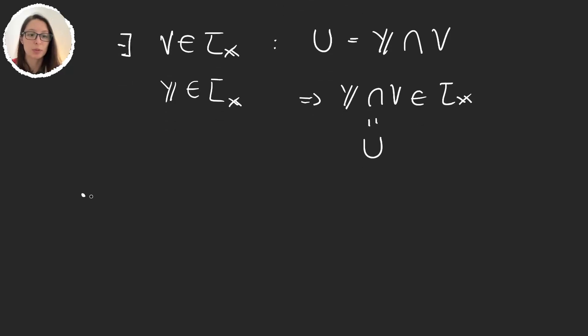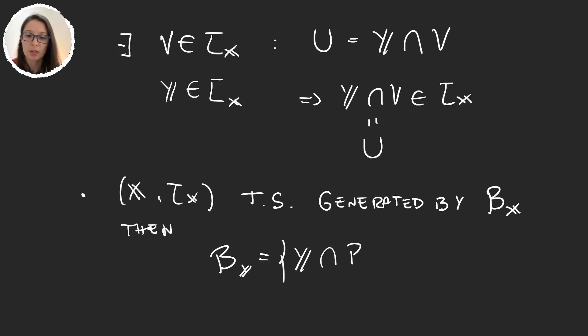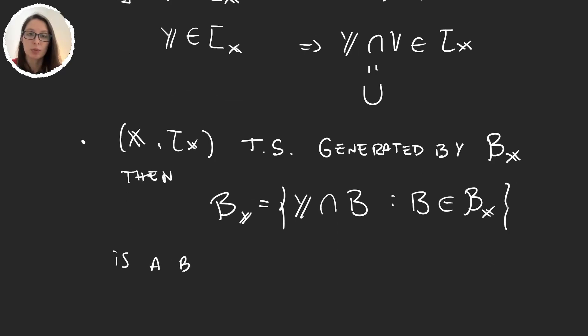Let's suppose we have again X, 𝒯_X, a topological space, and suppose that it's generated by a basis B_X. Well, then, the set B_Y of intersections of Y with B elements of the basis of X, this is a basis for the subspace topology in Y.